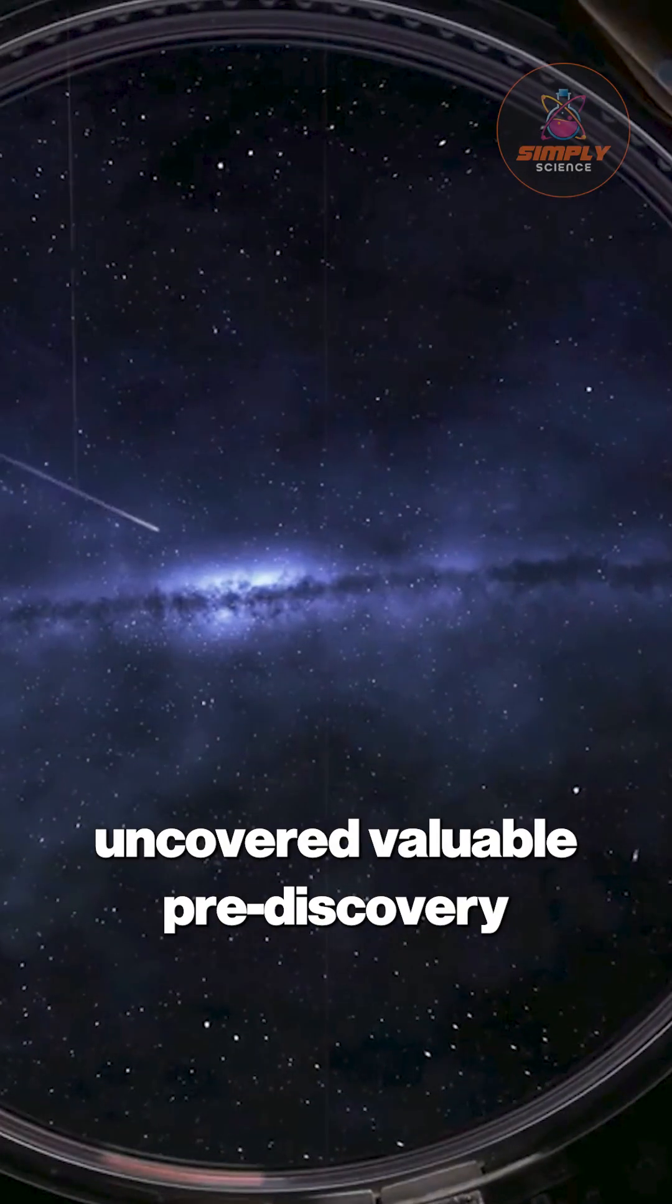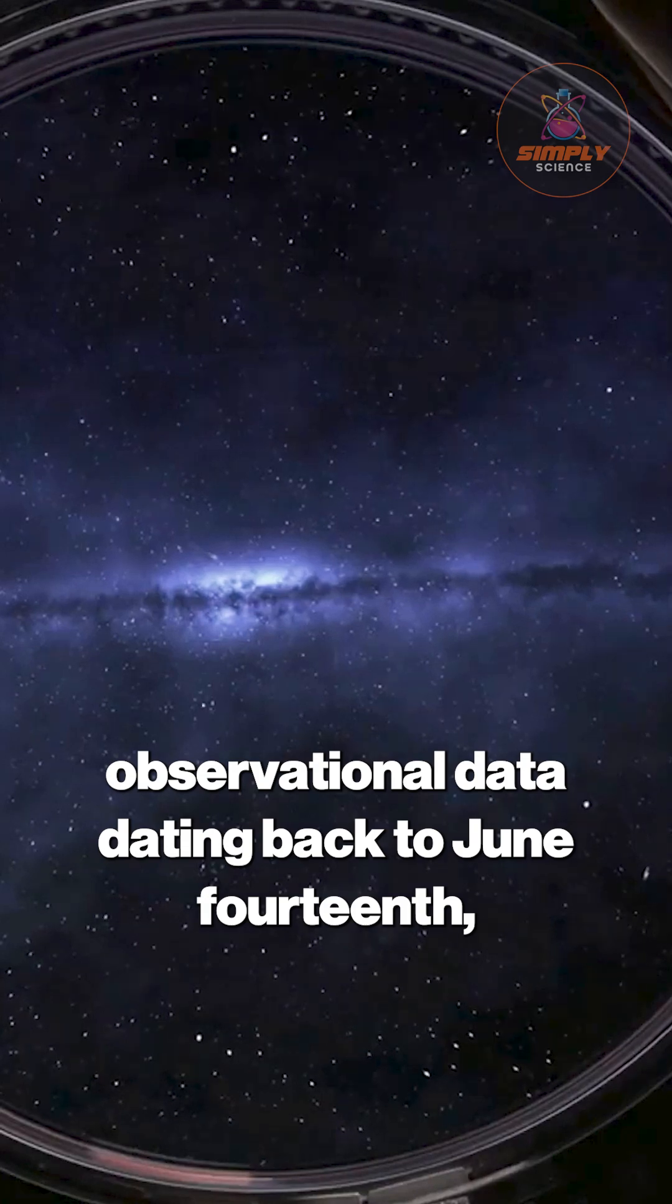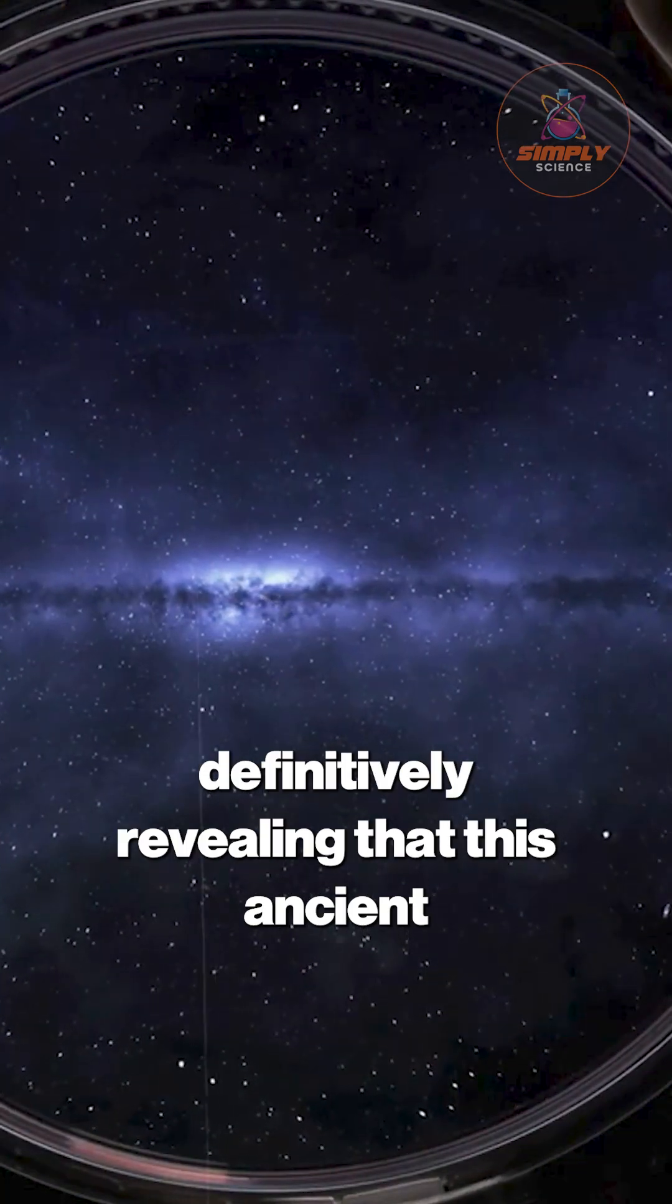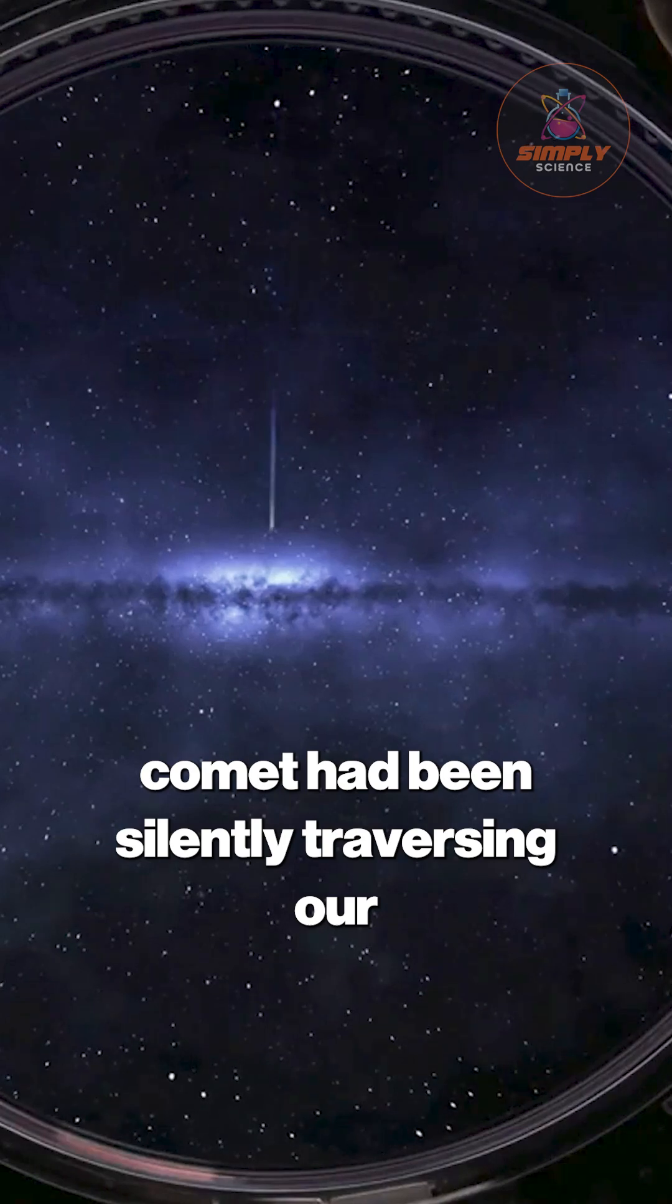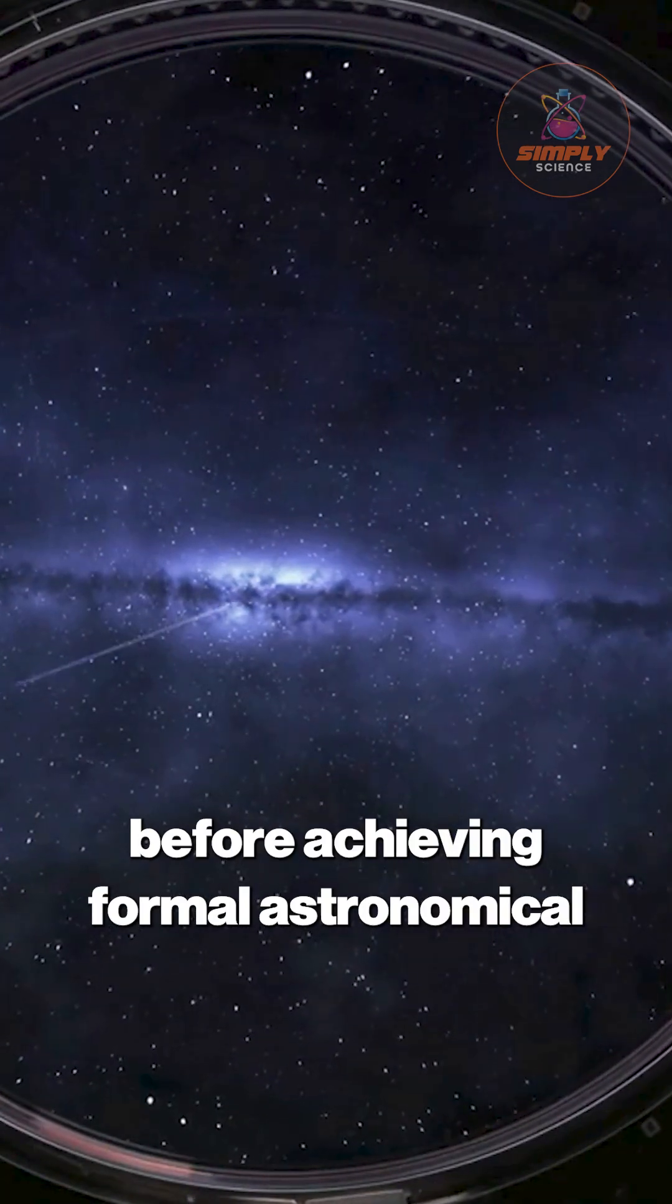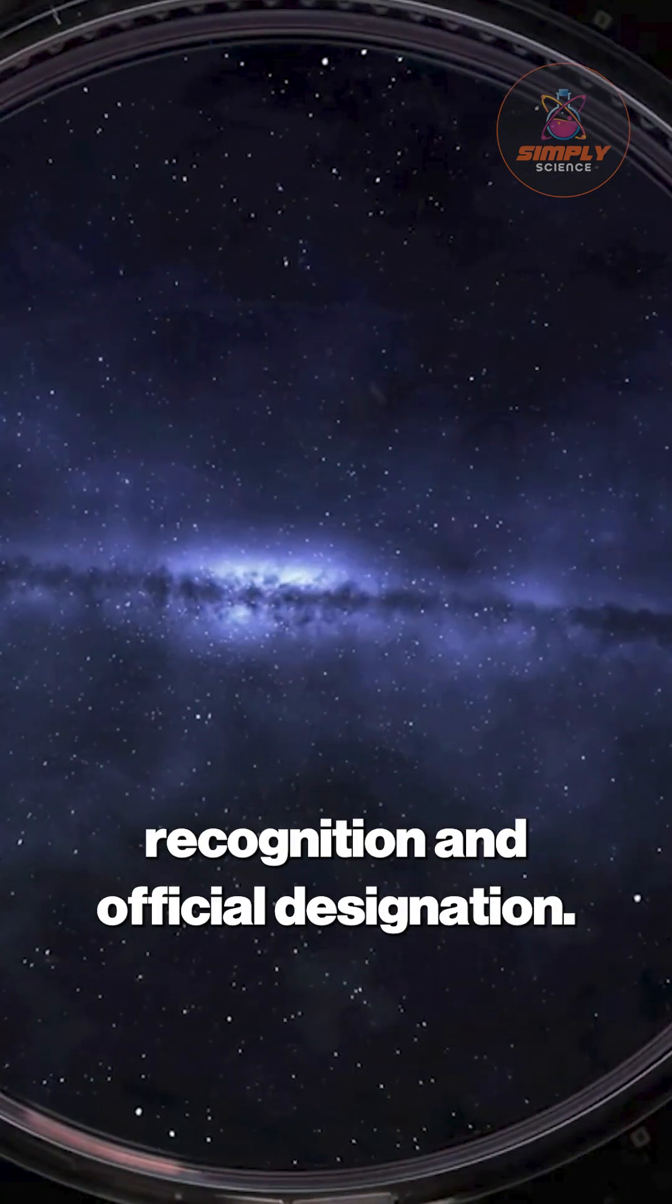Extensive archival searches later uncovered valuable pre-discovery observational data dating back to June 14, definitively revealing that this ancient comet had been silently traversing our solar neighborhood for several weeks before achieving formal astronomical recognition and official designation.